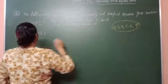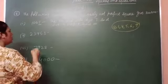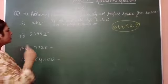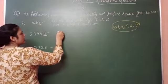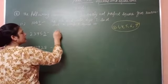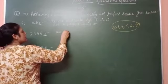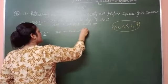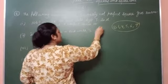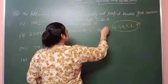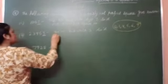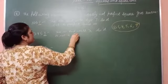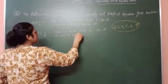Next, same as before. What is the digit at the ones place? That is 3. So the number ends with 3. Number ends with 3, so it is not a perfect square number. Clear?